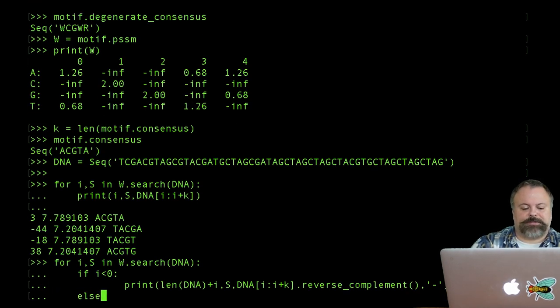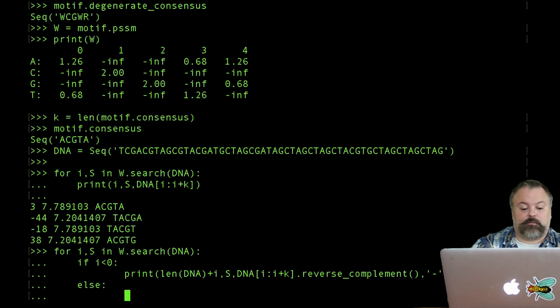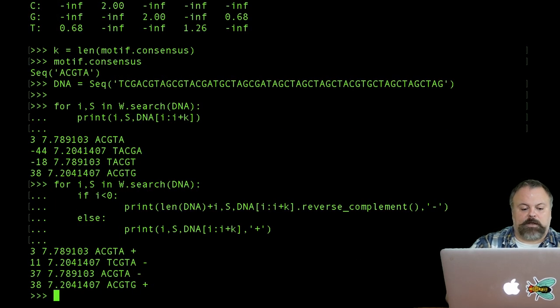So else, if it's a positive i, then it must be in the forward strand so we can print something similar to before, the position, the score, the DNA k-mer, and we can also print the strand being forward here. This gives us all of our sequences matching up with the CG dimer in the second and third position. Let's just check.